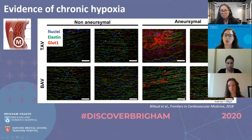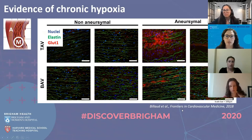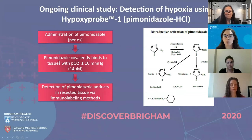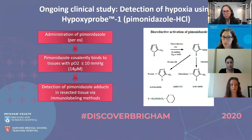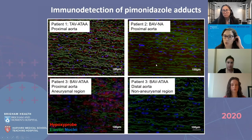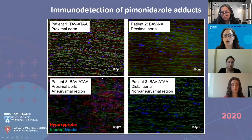You can clearly see that aneurysmal patients have much more GLUT1 expression. So we started a clinical trial using pimonidazole HCl, otherwise called Hypoxyprobe. Patients would take pimonidazole the morning of surgery; this compound binds to cells with low PO2. After resection and tissue fixation, we detected this drug in the tissue using immunofluorescence. On the top right is a control aorta with very little red staining — meaning very little hypoxic probe binding. On the left, an aneurysmal area of the aorta shows much more hypoxic area.